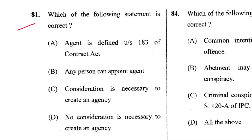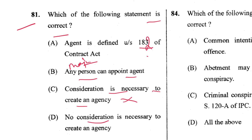Question 81: Which statement is correct about agency? Agent is defined in Section 182 — not 183. Any person can appoint an agent — yes, but a major person shall appoint. Consideration is necessary to create an agency — no, no consideration is necessary per Section 185. D is the answer.